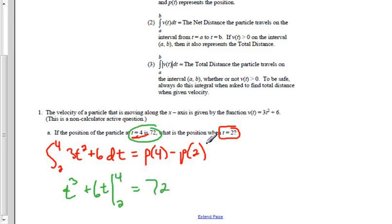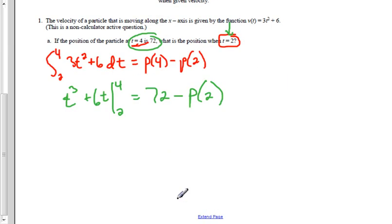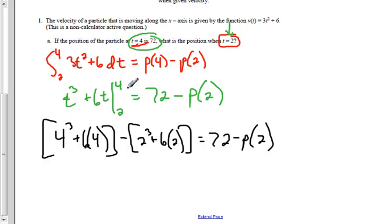p(4) we were given is 72, and I'm trying to find when time equals 2. Once I put those values in, I'll only have my one unknown. I've just substituted in the value of the antiderivative at the upper limit minus the value of the antiderivative at the lower limit.